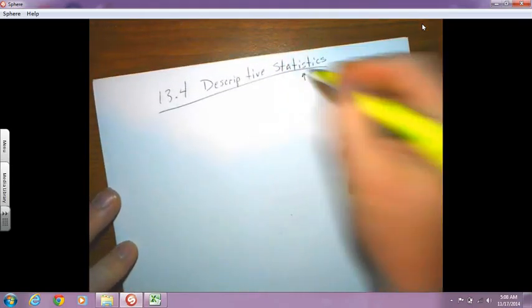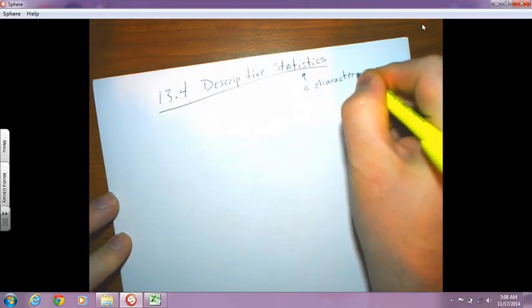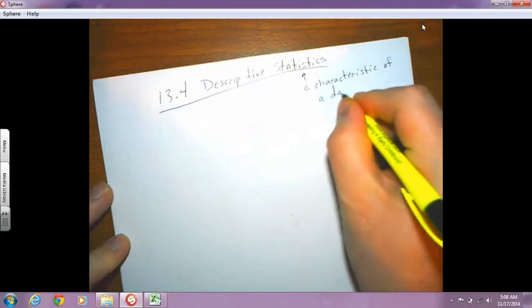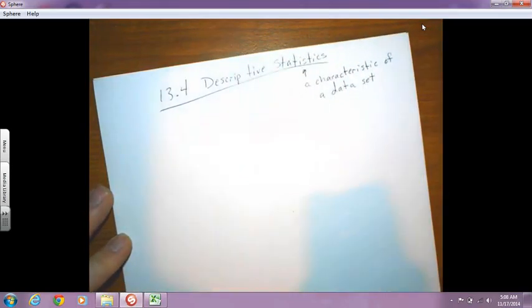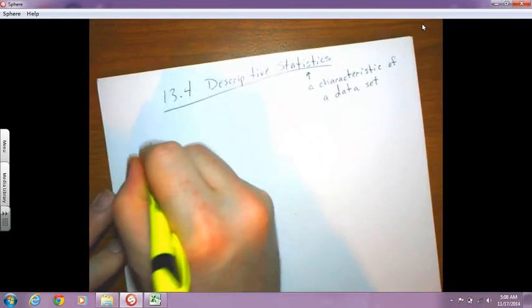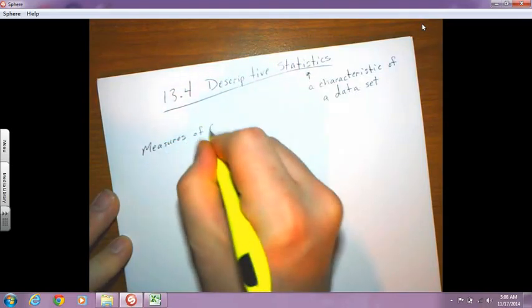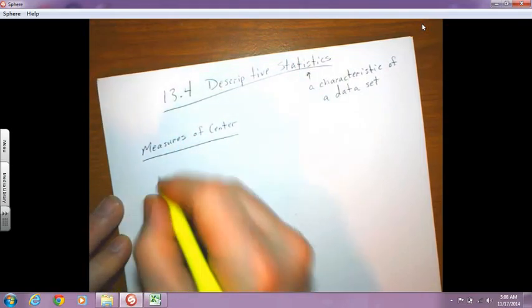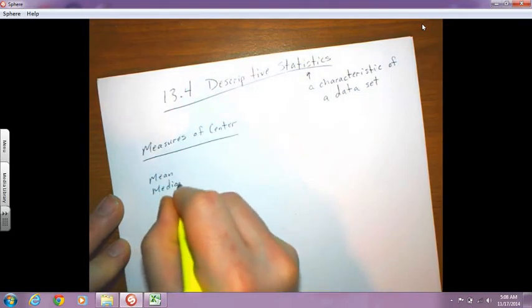So we're going to talk about statistics this way, we're talking about a characteristic of a data set, and the most common statistics that we're going to deal with are measures of center. And these are the ones that you guys have already seen. So the measures of center are mean, median, and mode.